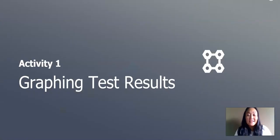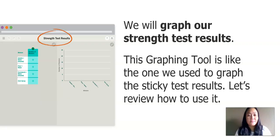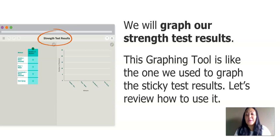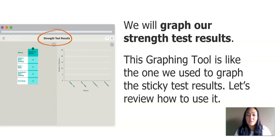In our first activity of our lesson, we will graph our test results. We will use a graphing tool just like what you see on the left. You remember back in many lessons ago, we used a similar graphing tool from our sticky test results. So first, let's review how to use it. This one is called Strength Test Results, and in our packet, we will include the link on how to access this graphing tool online.